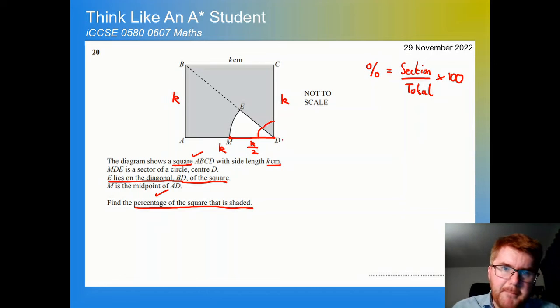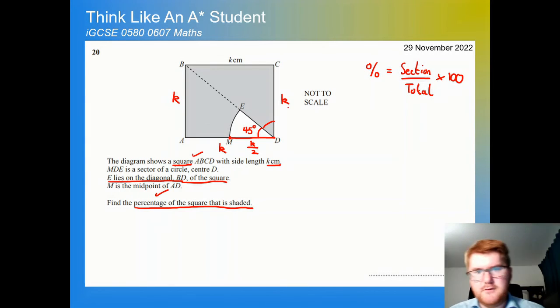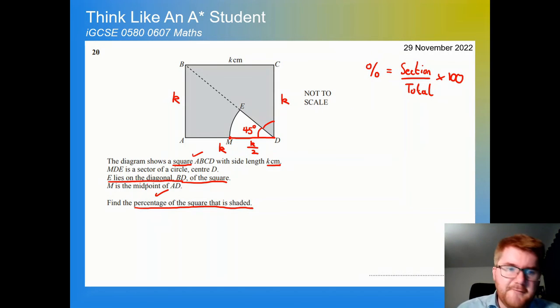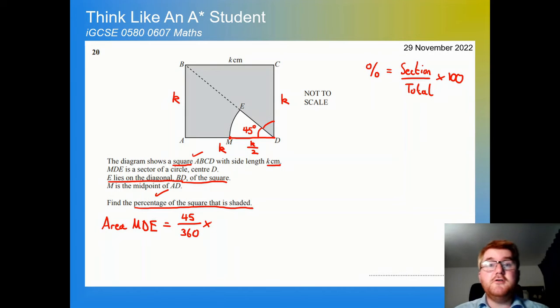And notice the only bit of information I haven't used so far. So I've used this and I've used the square idea, but I haven't used this: it lies on the diagonal of the square. That's my last key bit of information. Notice that these two angles, because this bisects the angle, these two angles are the same. And if this is 90 degrees, then this needs to be 45 degrees because these two things are equal. Now I've suddenly got enough information to work this out.